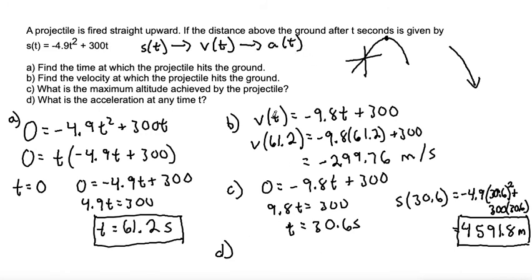So taking the derivative of velocity, we have negative 9.8t. When we take the derivative of that, the t just goes away, and we get negative 9.8, and the derivative of any constant goes to zero. So the acceleration is always negative 9.8. And that would be part D.